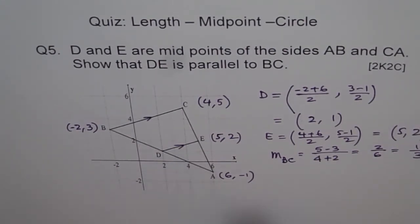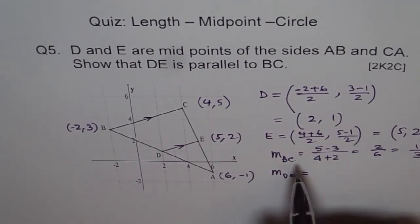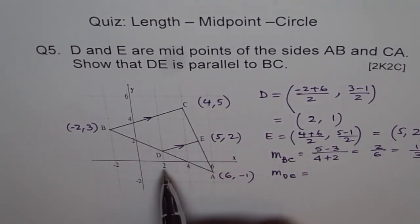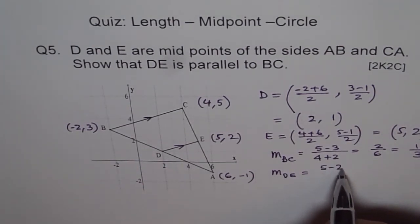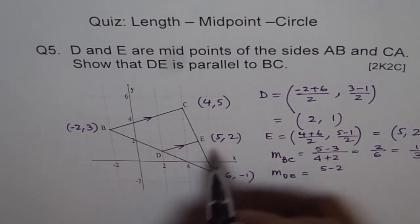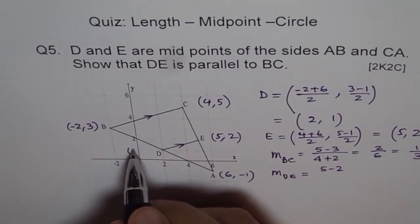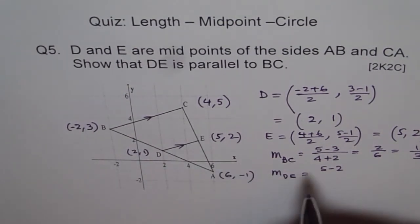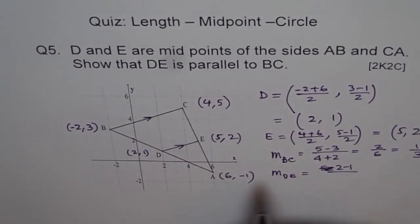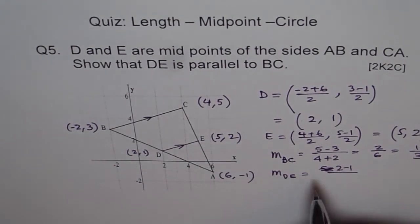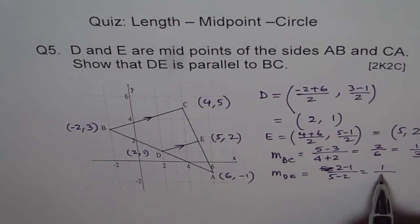Similarly, let's find slope of DE. So slope of DE is equal to... D is (2, 1). So X value is 2. Y values, right? Let me write this point first. So (2, 1), 2 comma 1. So 2 minus 1, Y2 minus Y1, which is 2 minus 1 divided by 5 minus 2. 2 minus 1 is 1 and 5 minus 2 is 3.